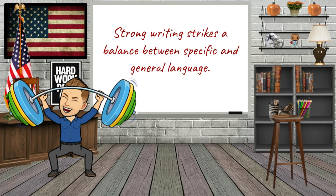Strong writing strikes a balance between specific and general language. We don't always want to be super general, and we don't always want to be super specific — we've got to strike a balance. Talk about some general things and then get a little more specific as you go. You can't be too general and never get to the specifics, because your reader is going to leave with a lot of questions. But you can't always be specific either, because your reader might not know where you started. So you want to be general and work your way to more specific in each paragraph.